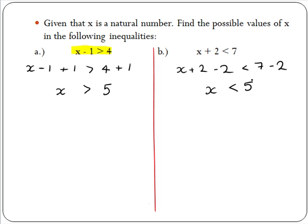Our answer is x is less than 5. This means we can replace x in our original inequality with any natural number less than 5 and the inequality will be true. For example, x equals 3 will satisfy the inequality because 3 plus 2 equals 5 and 5 is less than 7. But x equals 6 will not satisfy the inequality because 6 plus 2 equals 8 and 8 is not less than 7.